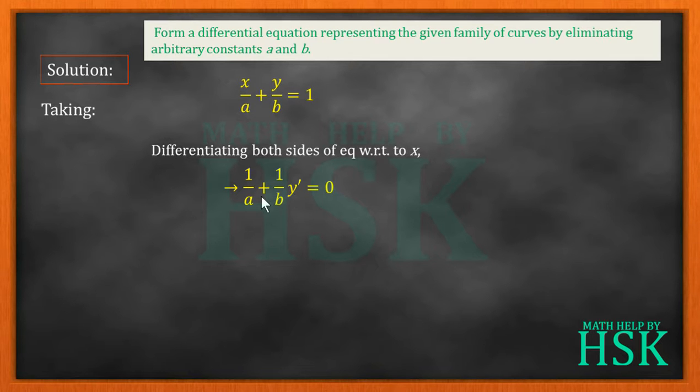Because 1 upon b is actually a coefficient and d by dx of y can be written as y dash. 1 constant is equal to 0. Okay, so on differentiating this equation with respect to x I am going to get this expression or equation.